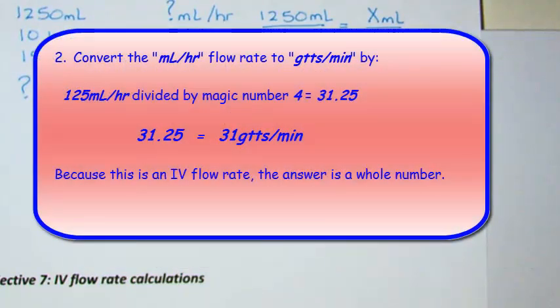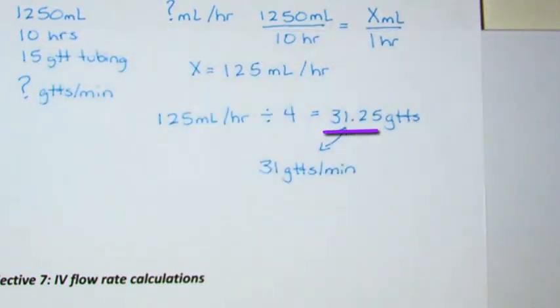This will then be divided by the magic number of 4 used for the tubing and for the conversion of a milliliter per hour drop rate to a drop per minute flow rate. The answer is 31.25, but all IV flow rates, whether by gravity or pump, are whole numbers. So the answer is 31 drops per minute.